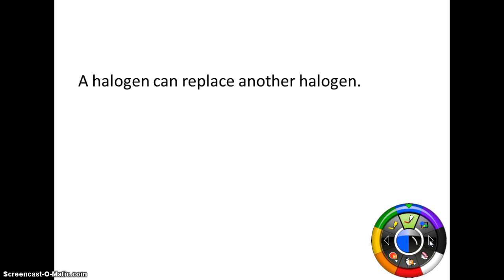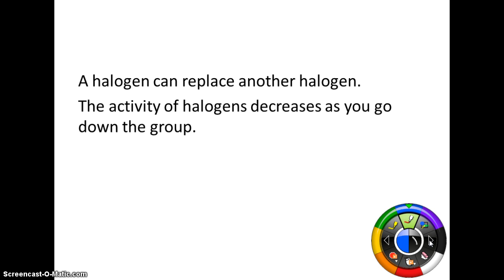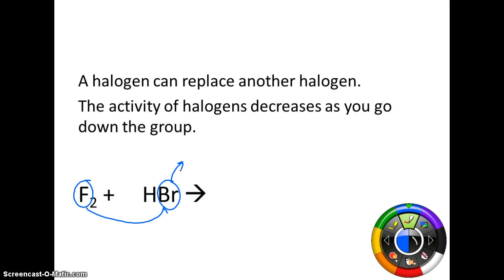Halogens can replace another halogen, and we're going to use the halogen group as our activity series — they also decrease in activity as you go down the group. So if you have fluorine plus hydrobromic acid, fluorine is at the top. This fluorine is going to come in and it has to replace another halogen, so it kicks the bromine off. When bromine comes off it's going to be by itself; bromine is one of our seven diatomic, so you put a subscript 2. Now hydrogen is going to be bonded to the fluorine — hydrogen is a +1, fluorine is a −1 — so you get HF, hydrofluoric acid.